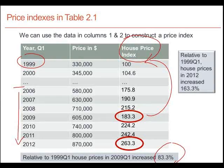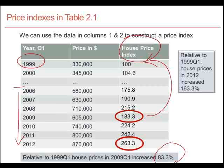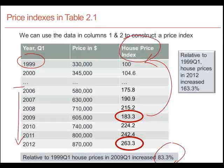By the same reasoning, in 2012 prices had gone from $330,000 in 1999 up to $870,000. Relative to the price in 1999, the $870,000 price in 2012 represents a value of 263.3 relative to a value of 100 for 1999. We can immediately say the value has increased by 163.3% because it has gone from 100 to 263.3. All we did was divide each value in the middle column by the base year value and multiply by 100.